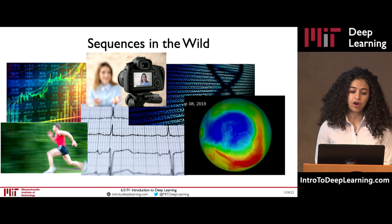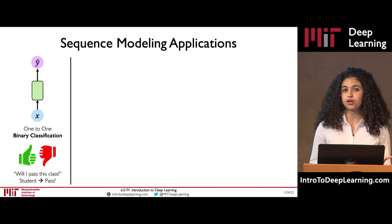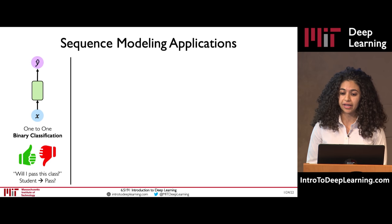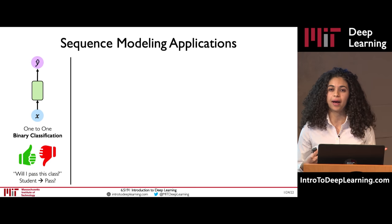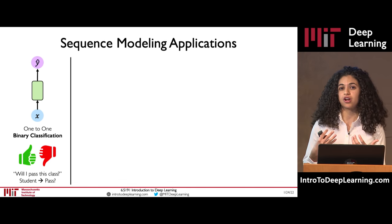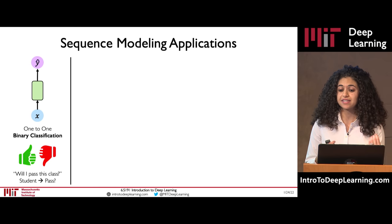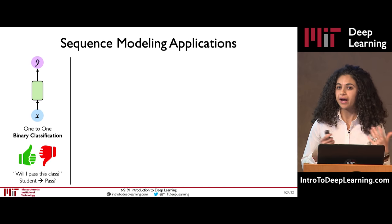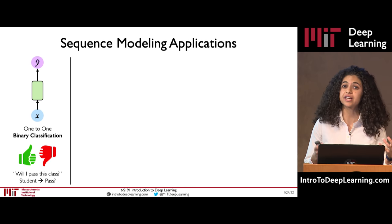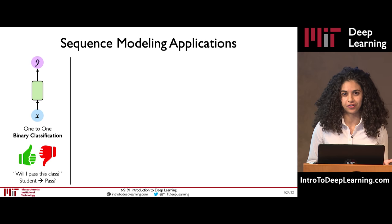Now that we've gotten a sense of what sequential data looks like, let's consider applications of sequential modeling in the real world. In Alexander's first lecture, we learned about feed-forward models that operate on a one-to-one fixed setting — a single input to a single output. He gave the simple example of a binary classification task predicting whether you, as a student, will pass or fail this class. In this example, there's no real component of time or sequence.